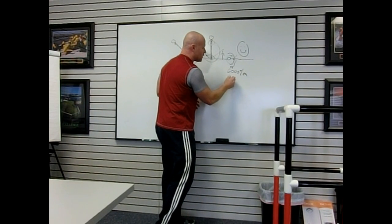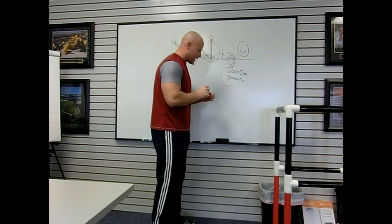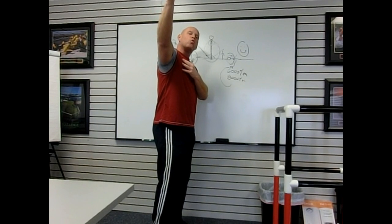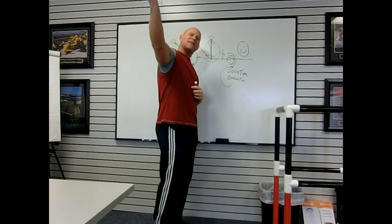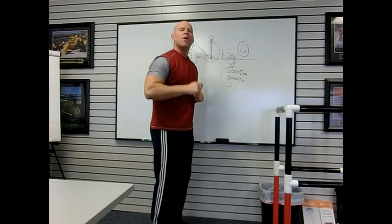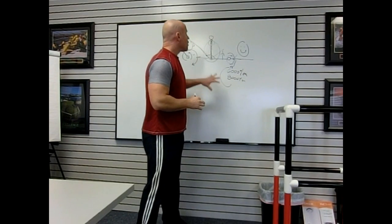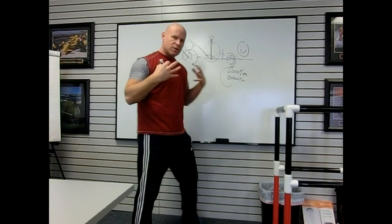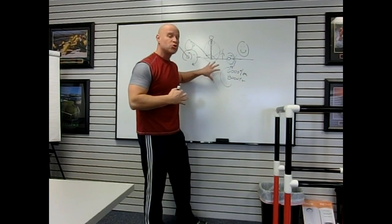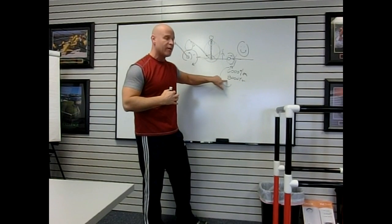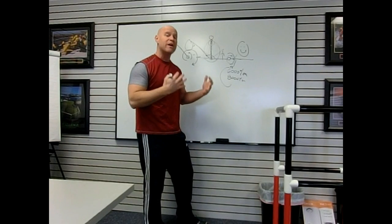Higher level pitchers can reach upwards of 8,000 degrees per second. You have this really dramatic burst of internal rotation speed right as the ball is being released, which creates distal end speed and momentum as the ball is accelerated towards the plate. Guys who can throw hard do this extremely well and are able to create very high internal rotation speeds by controlling this mechanism in a very efficient way.